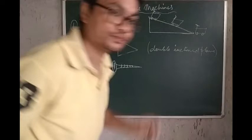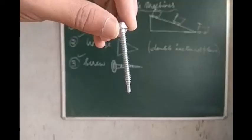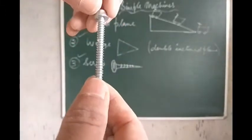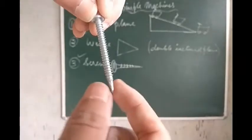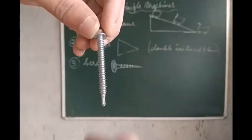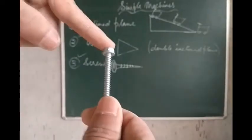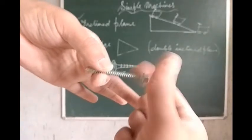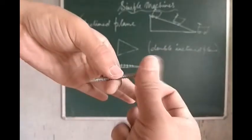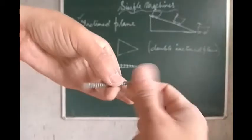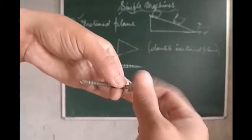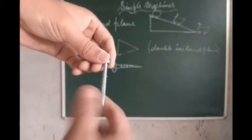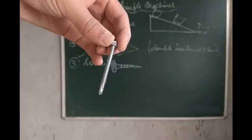Let me show you a screw. You can see it has grooves like this — these grooves are called threads. It also has a pointed end. So a screw is not driven in by a hammer. At this end we use a screwdriver — if we use a screwdriver to rotate it like this, you can see it's going inside. The screwdriver is used to rotate it, and you can see how nicely and easily the screw gets inside. This is possible because of the grooves, or threads. A screw is also a simple machine.